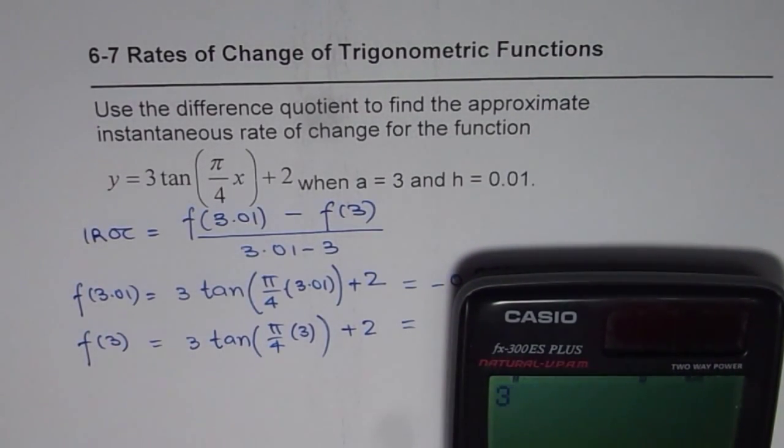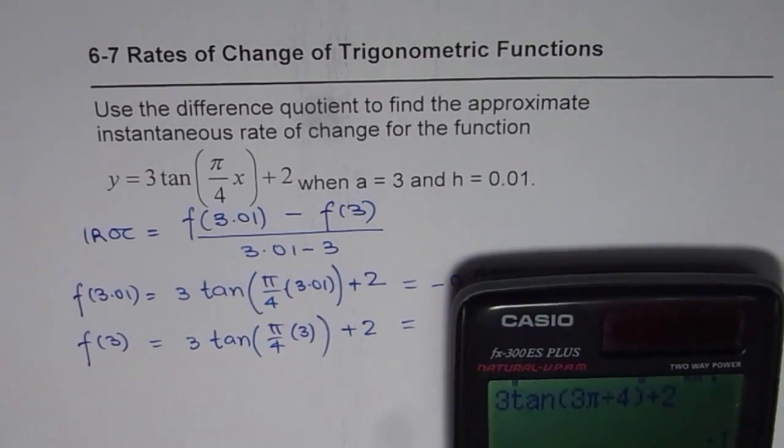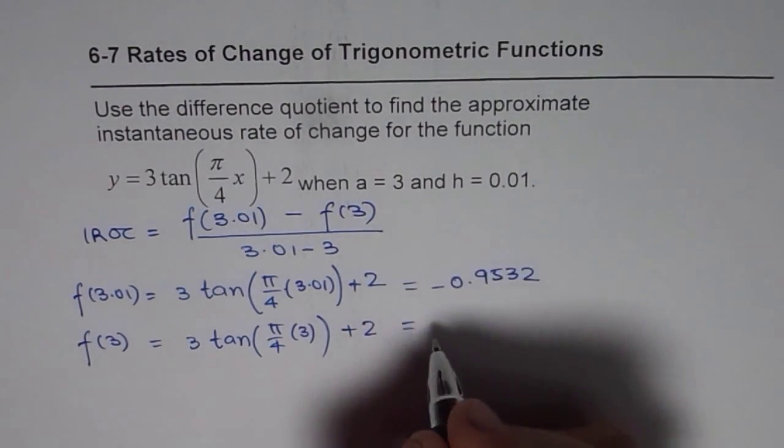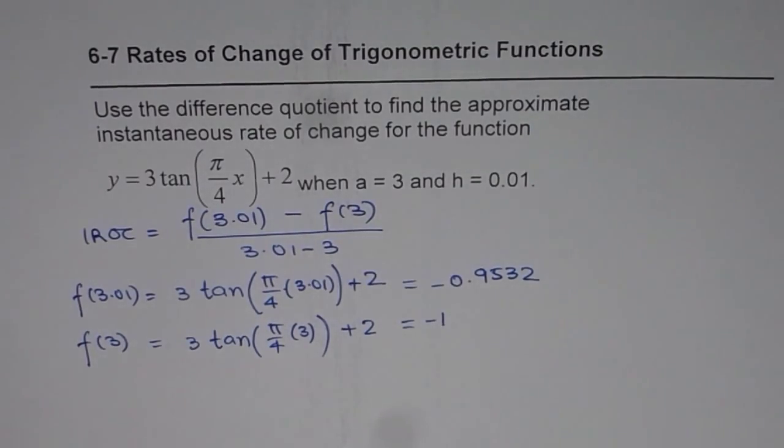So tan within brackets, we already have 3 times pi divided by 4, bracket close, plus 2 equals minus 1. So this value is minus 1 for us.